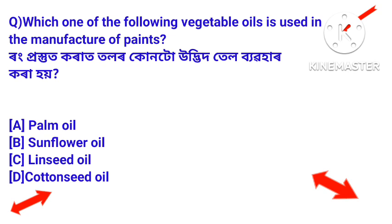Question: Which one of the following vegetable oils is used in the manufacture of paints? Among vegetable oils, which one is used in making paints? Answer: Linseed oil.